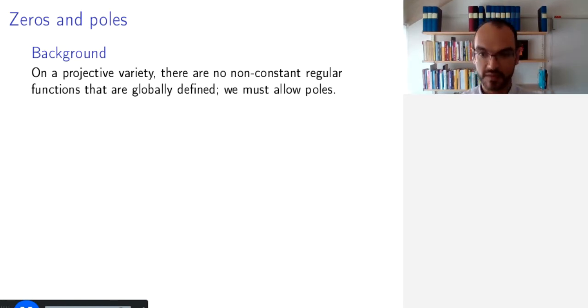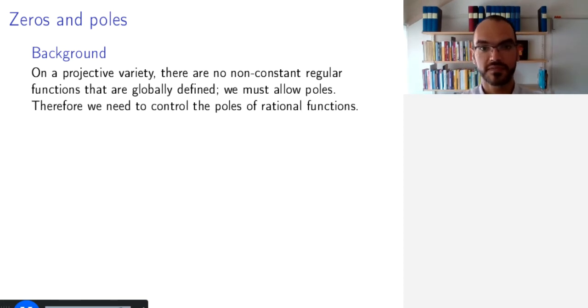And the functions we get are rational functions, f divided by g, and we must allow points x such that g of x equals 0. Otherwise we'll only have the constant functions. But having a pole is kind of a bad behavior, so we want to control the poles of rational functions in some fashion.